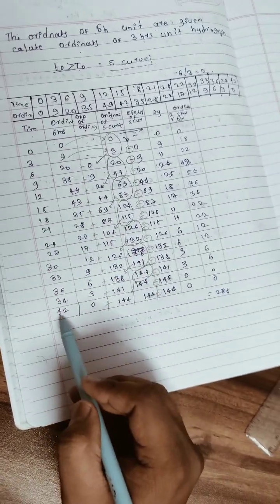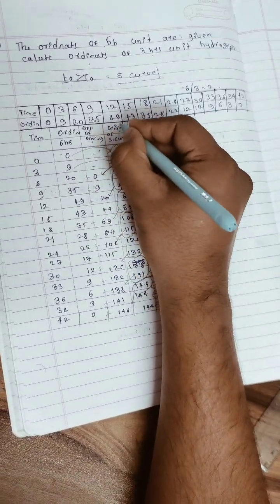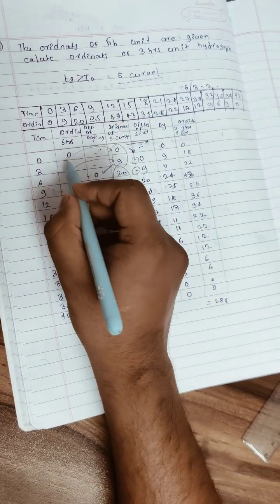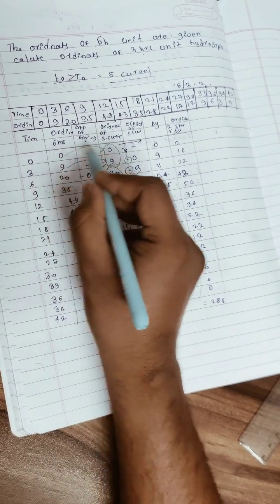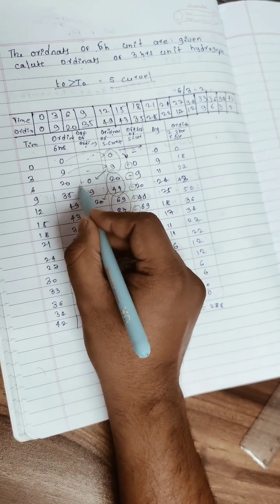For ordinates of S-curve, we put these values as is here first. Then we start the calculations: 20 plus 0 is 20, 35 plus 9 is 44, then 49 plus 20 is 69.